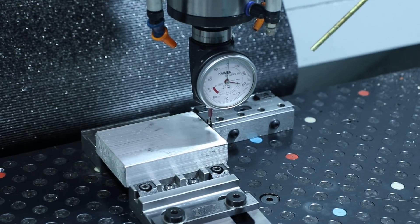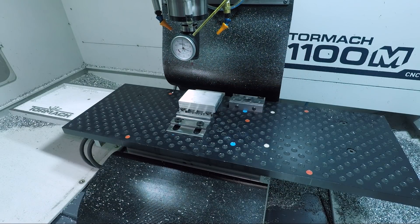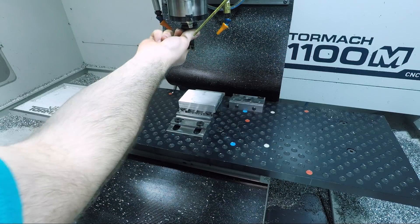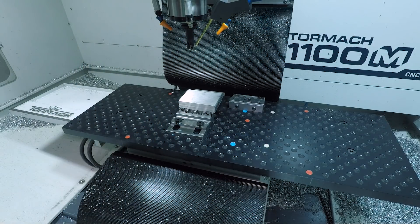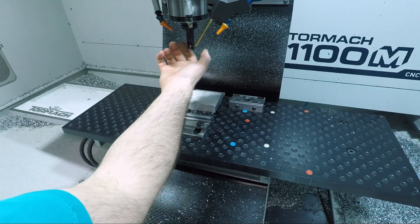I'm going to use the same insert for roughing and finishing the side walls. And since these inserts have been ground, the diameter is a hair smaller than the nominal three quarters of an inch this tool usually is. So I measured the actual diameter using our Speroni toolsetter and entered that value into Fusion as the tool's diameter.